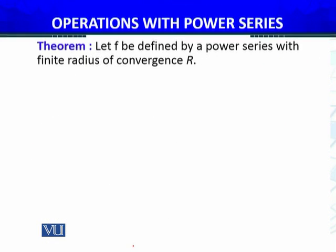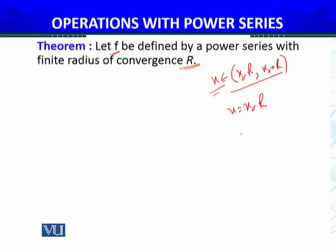Let f be defined by a power series with finite radius of convergence R. The interval of convergence is the open interval (x₀ minus R, x₀ plus R). The power series of f(x) is convergent for all x in that interval. At x equals x₀ minus R, and at x equals x₀ plus R, we don't know anything — we can't say anything.